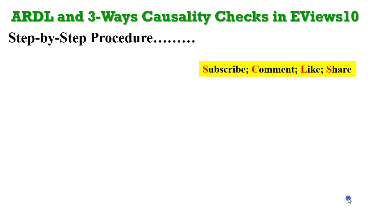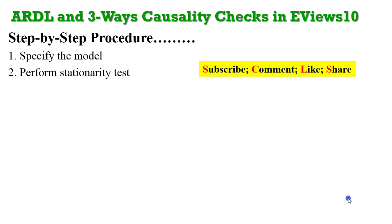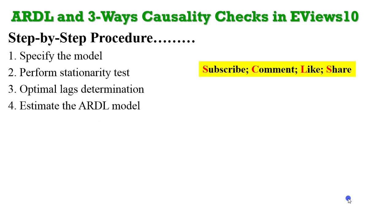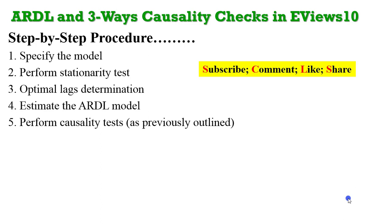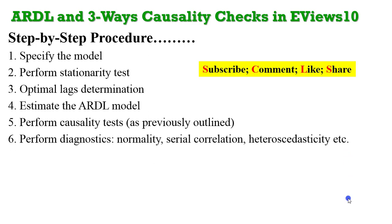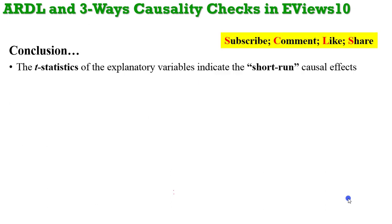Now, how do you go about this in eViews? Step-by-step procedure: number one, specify your model correctly. Number two, perform stationarity tests — the only reason we keep testing for stationarity in the ARDL model is to be sure that none of the variables are integrated of order two; otherwise there is no reason to test. Also, determine the optimal lag length — don't arbitrarily use lags; get your optimal lags from any of the information criteria. Then estimate the ARDL model and perform causality tests using any of the approaches explained. For results to be taken seriously, perform diagnostic tests. The T-statistics of the explanatory variables can always indicate short-run causal effects.